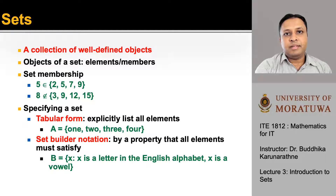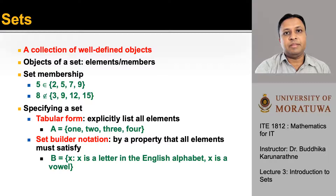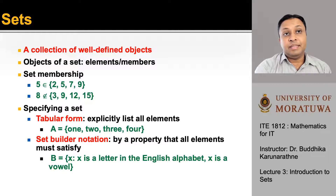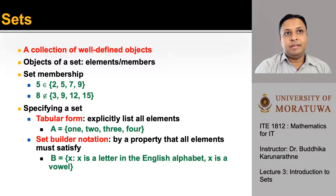Let's look at the formal ways of specifying a set. The first is tabular form, which explicitly lists all the elements of a set. For example, set A has the members one, two, three, and four. The second is set builder notation, where the set is defined by a property that all elements must satisfy. For example, set B is defined as x where x is a letter in the English alphabet and x is a vowel.